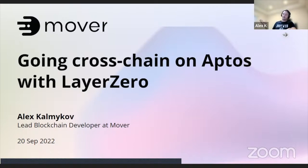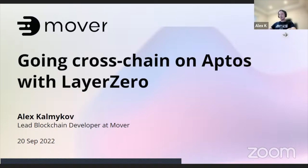Today we're going to look at Layer Zero, which we believe at Mover is one of the most solid cross-chain protocols. We're going to see how it can be used to go cross-chain on Aptos — basically how we connect Aptos with other chains and make a whole plethora of new cross-chain applications viable and possible.